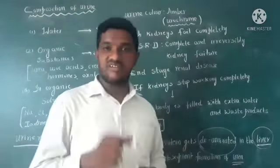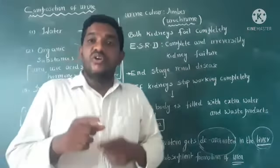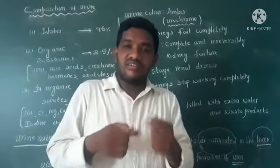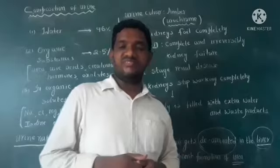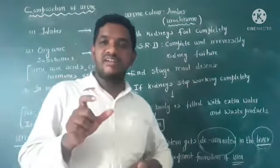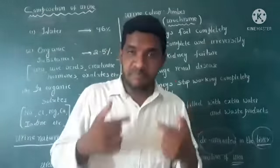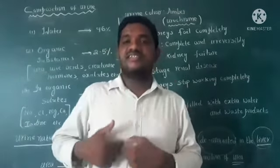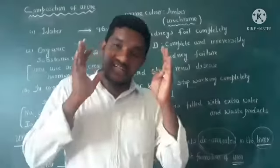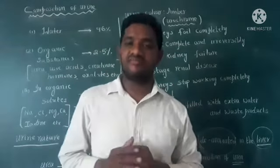In the liver, during deamination, urea is formed. Keep in mind: urea is formed in the liver. The liver is present on the right side of our body and is the largest gland in our body.